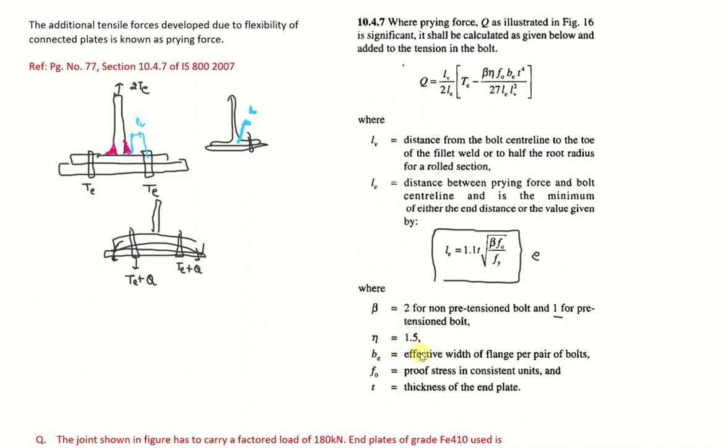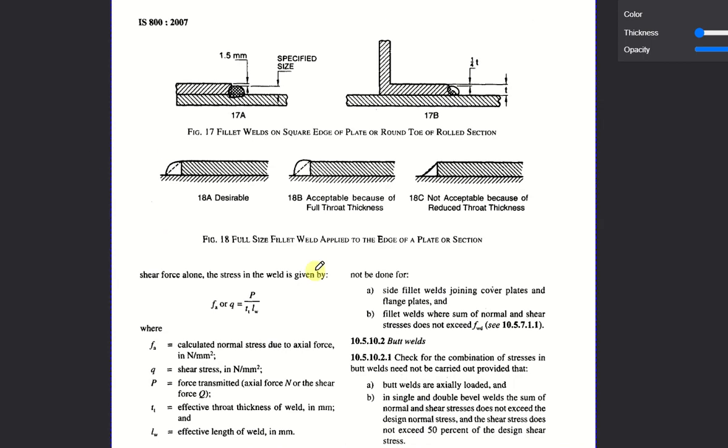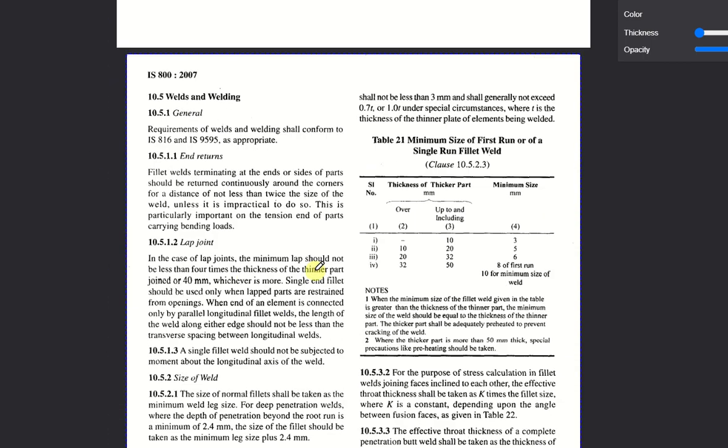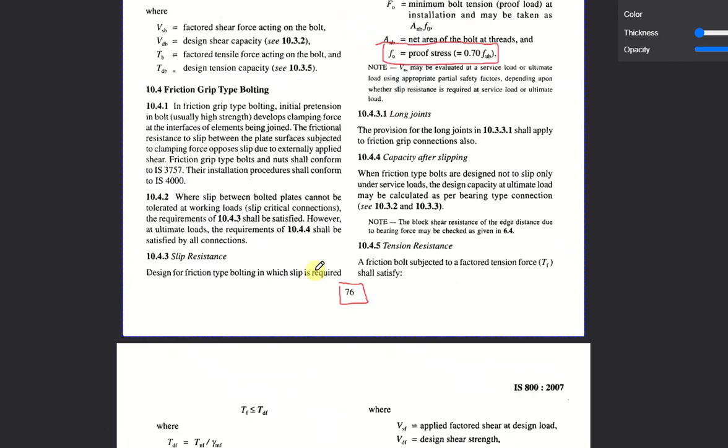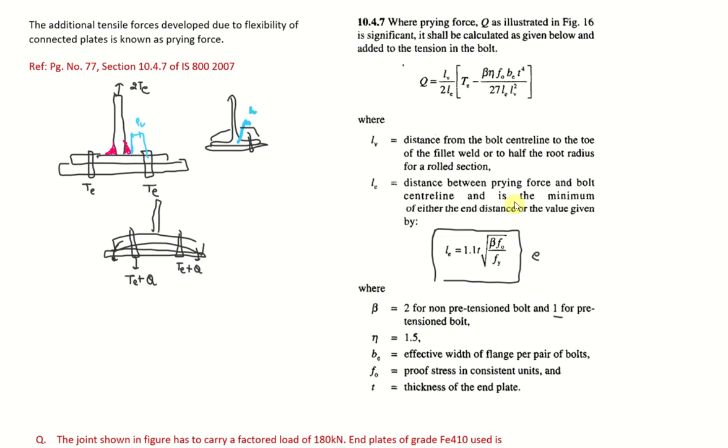Eta is 1.5. The value is directly given. Be is the effective width of the flange. So if you imagine that is width of the flange. F0 is a proof stress in consistent units and it is mentioned in code book page number 78.